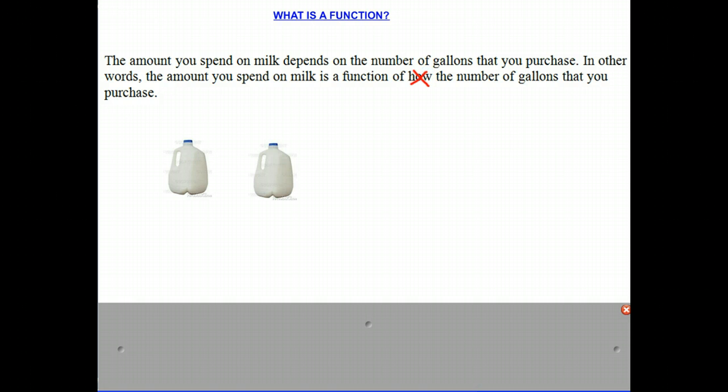Now if we had two gallons of milk, clearly the amount you spend on the milk will go up since it depends on the number of gallons that you have. So two gallons would cost $7. If I wanted to have three gallons, clearly three gallons would be $3.50 plus $3.50 plus $3.50 or $10.50. So this is a function where the amount you spend on the milk is a function of the number of gallons that you purchase.